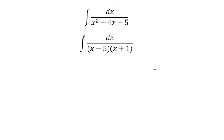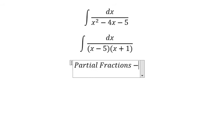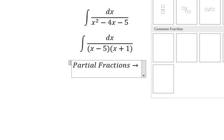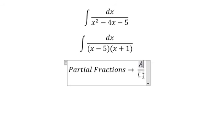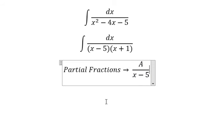Next, we need to use partial fractions, so we get A over (x-5) plus B over (x+1).